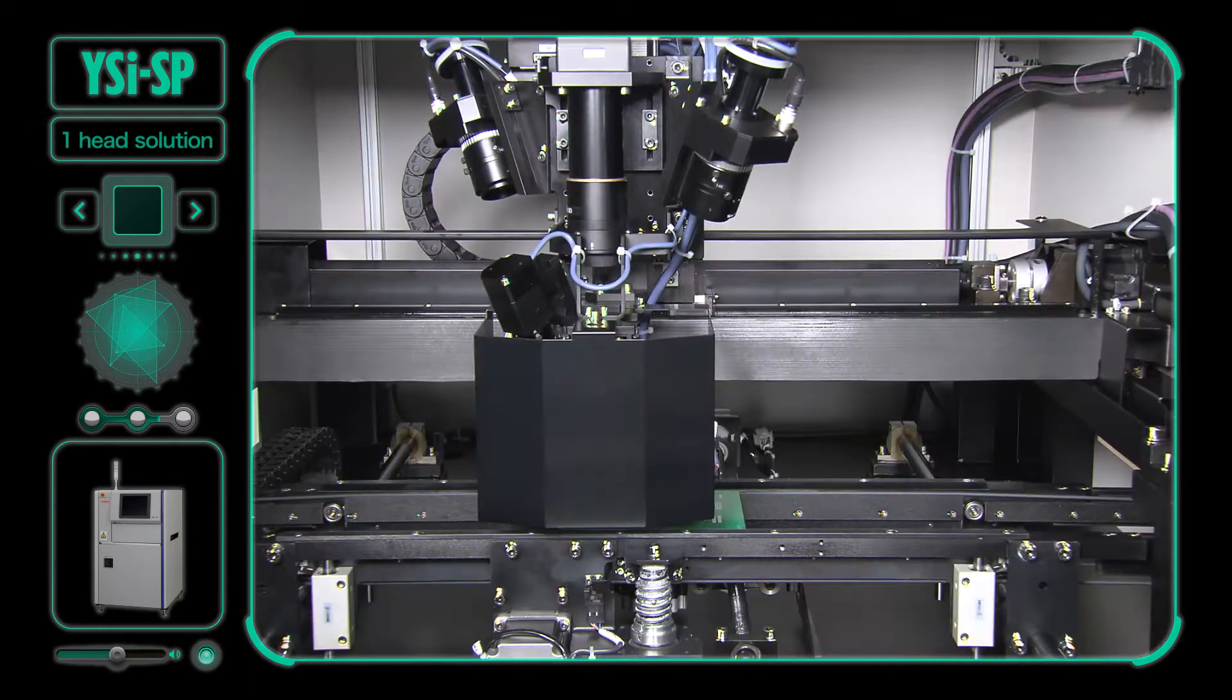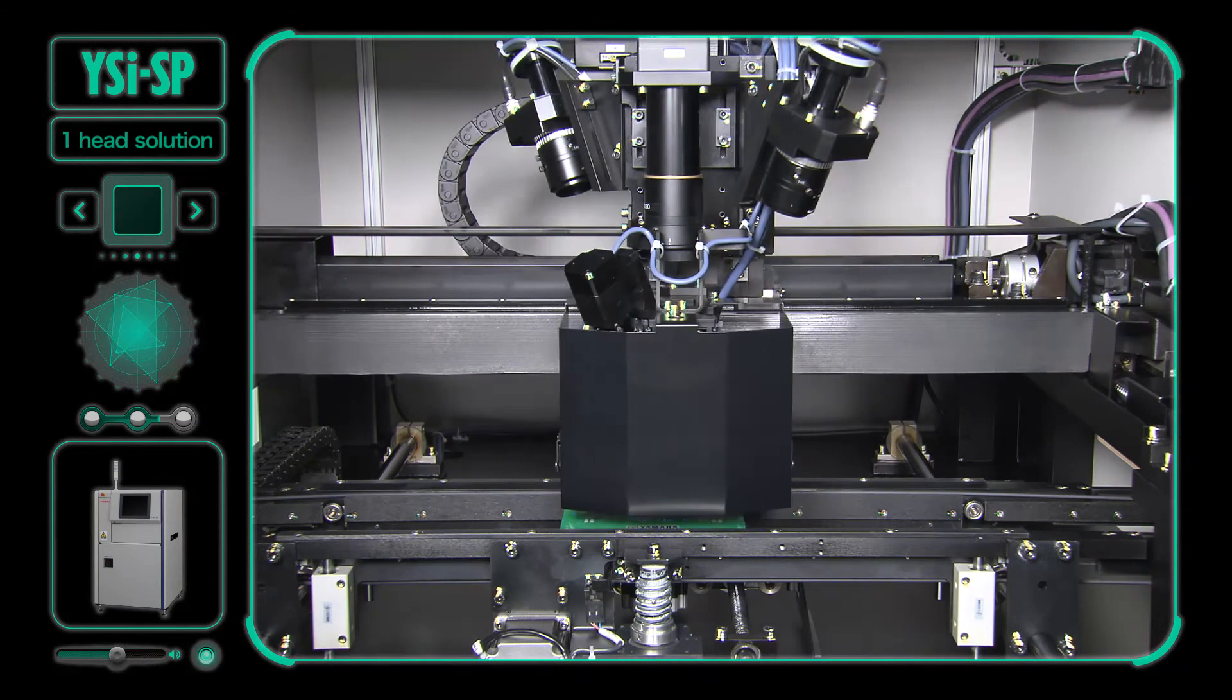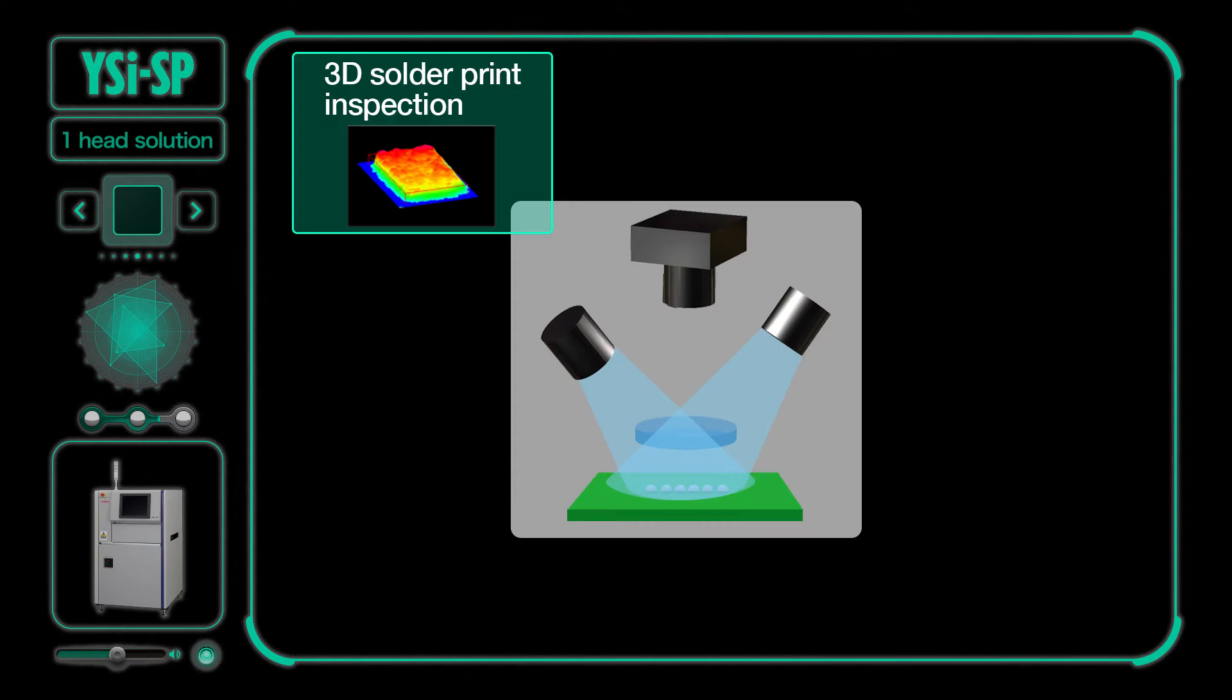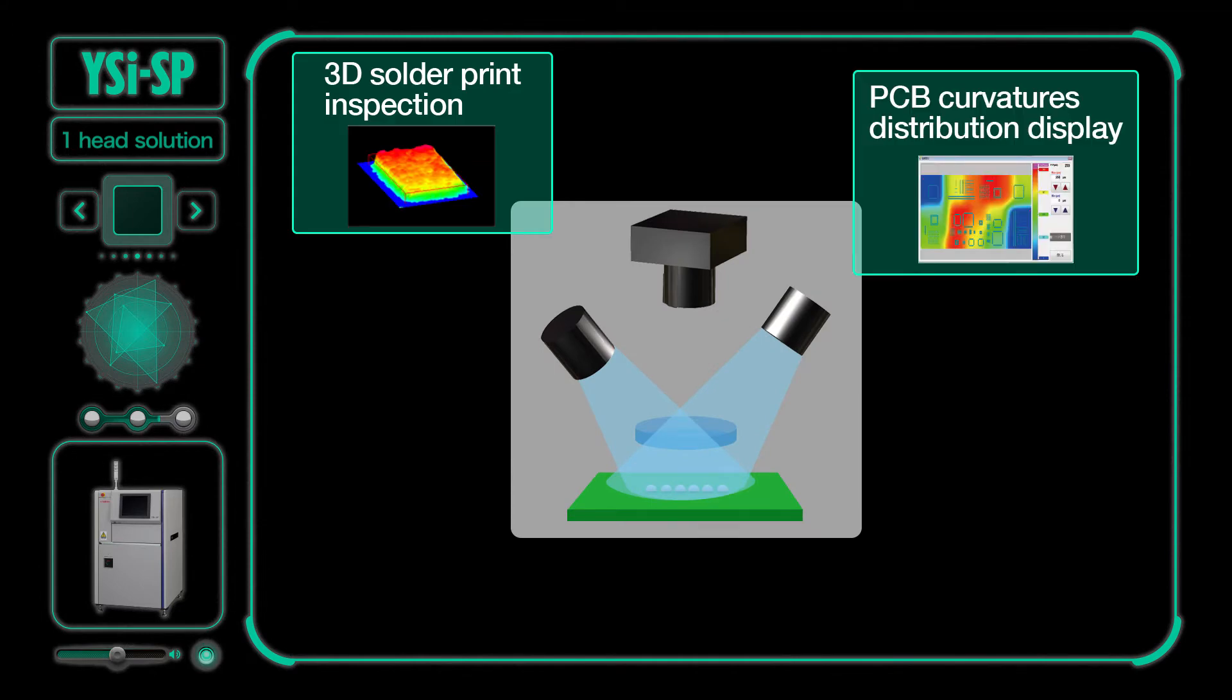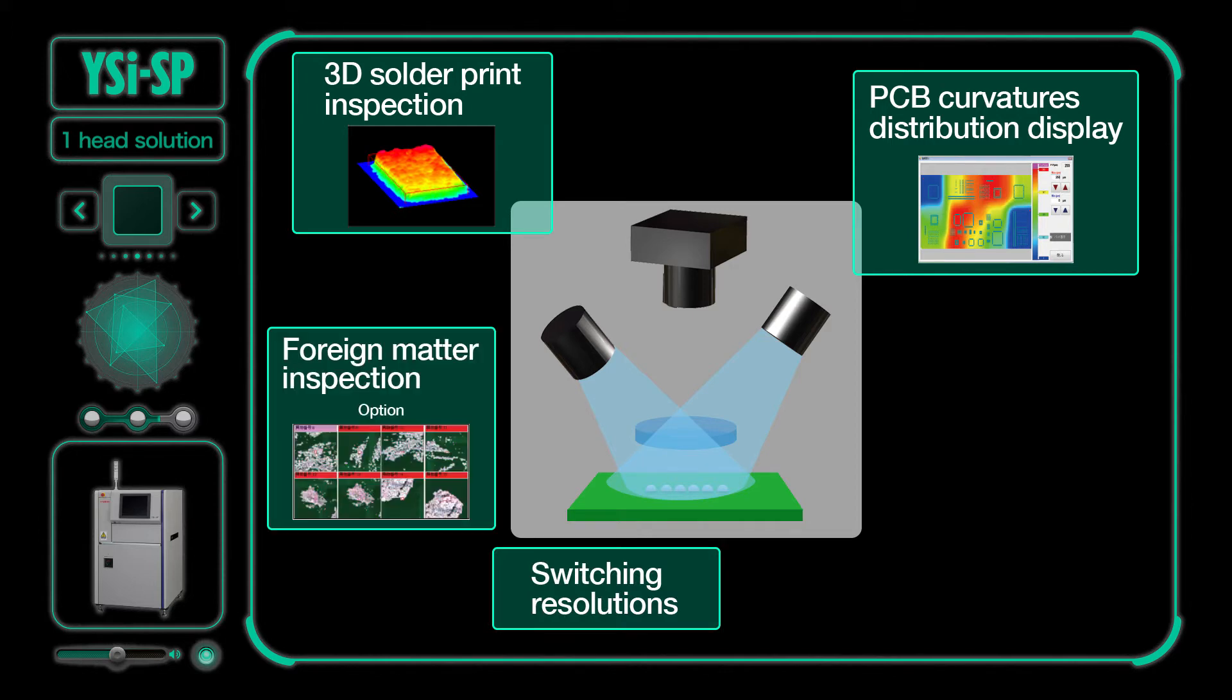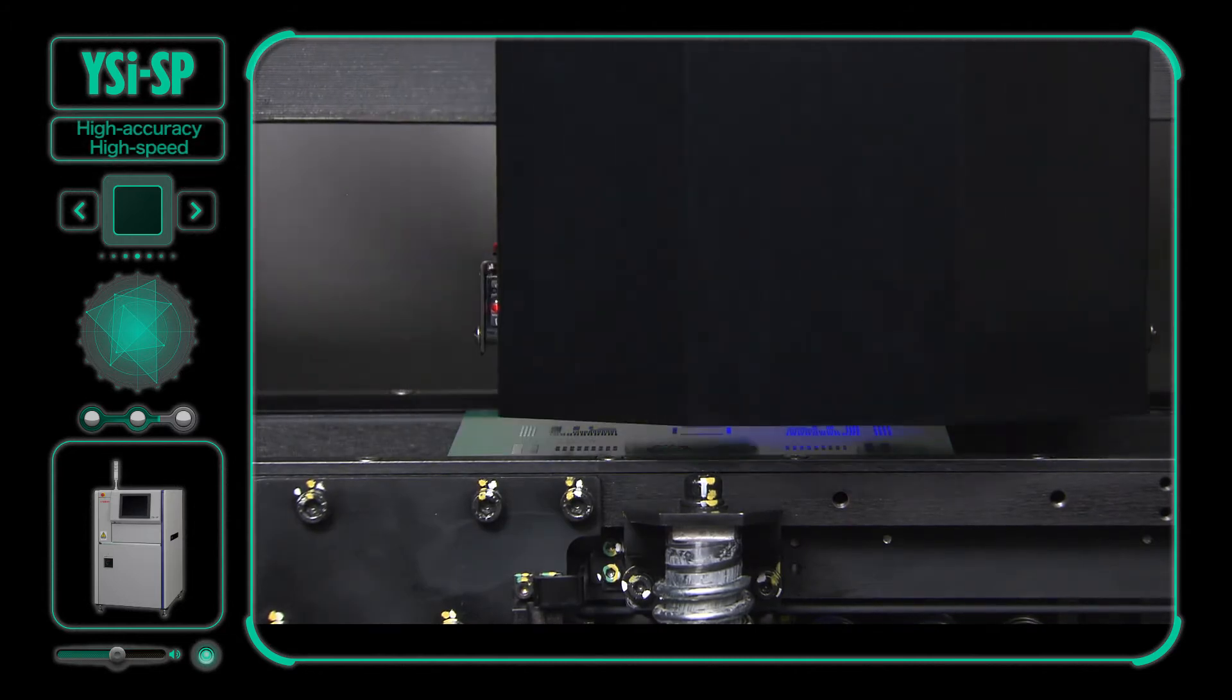First, let's look at the one head solution. Yamaha applies diverse functions into a single head. Even on SPI, diverse inspections can now be made on just one machine, such as accurate inspections by a unique measurement algorithm combining 2D and 3D, or switching resolutions by super resolution technology. Furthermore, you can add options that handle foreign matter and 3D bonding inspections.